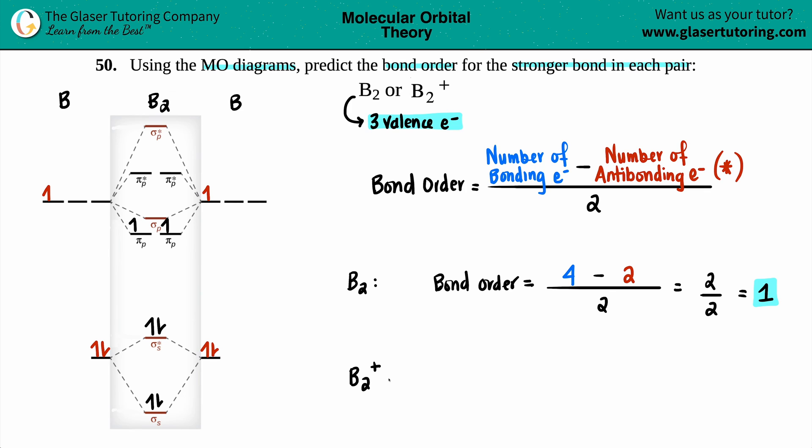We're going to do the same thing for B2+. Remember a plus sign means you are losing an electron - in this case one electron. Since it's only losing one, you have to get rid of it from the top energy level. Maybe I'll get rid of this one, but by doing that I have to remove one from the top energy of my molecular orbital.